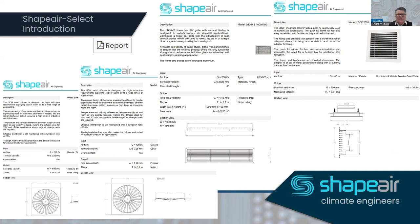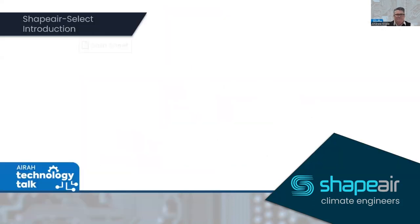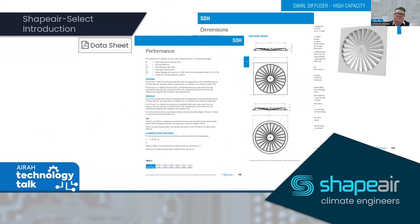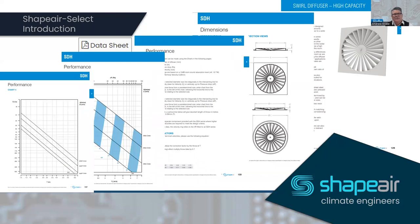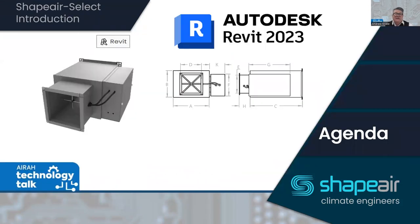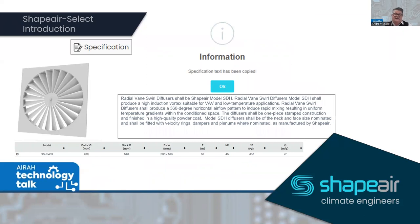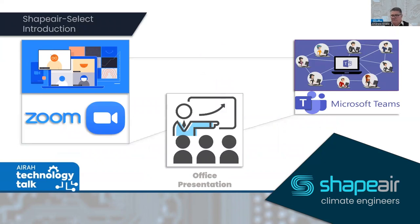If you'd like to understand how to use that software, please get in touch. Within the software you can also access all data sheets for all products, Revit files for any product, and at the touch of a button a specification will be produced in notebook form ready to paste anywhere you like. We can meet in your office or ours, or via Zoom or Teams — that's up to you.